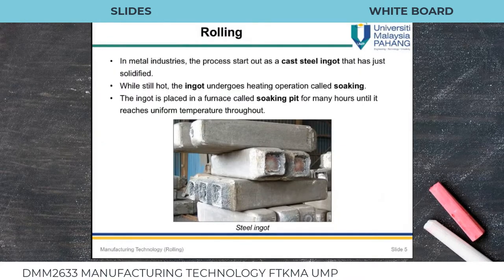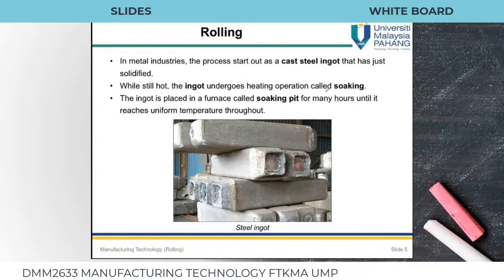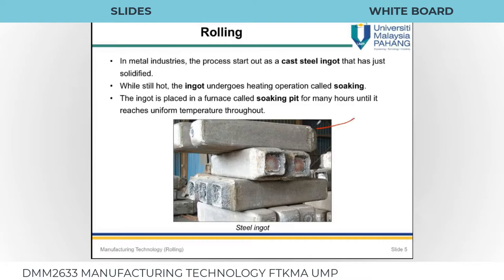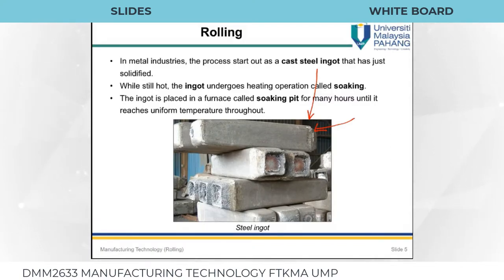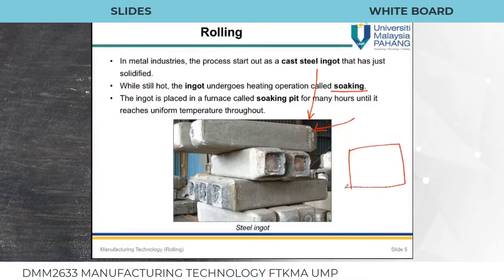First we do casting. In casting we cast large bulk quantities of material, and casting bulk quantities gives us shapes called ingots — these are casted steel ingots. While the ingot is still hot, we put it under a soaking process. Soaking is a process in which we have a furnace and we place the ingot inside and heat it slowly.